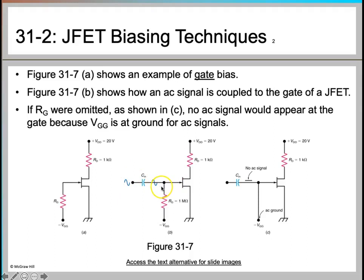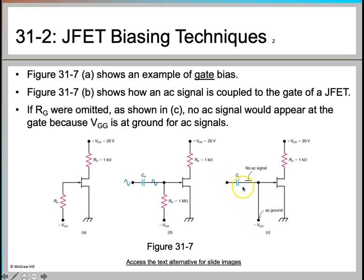In the third circuit, the RG resistance has been removed, so there will be no AC signal going to the gate because the signal will go through the terminal to ground. These are three variations of the gate bias circuit — one showing coupling via capacitor, and one showing how the AC signal can be grounded by removing RG.